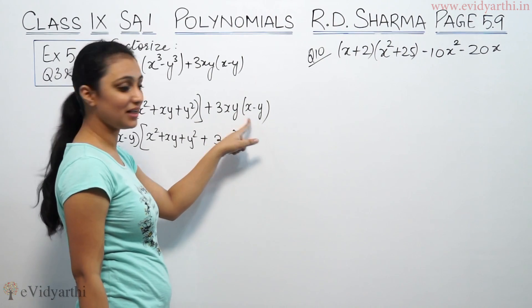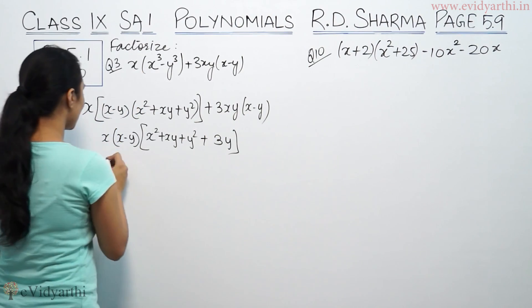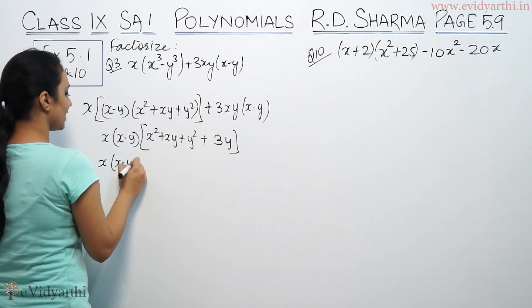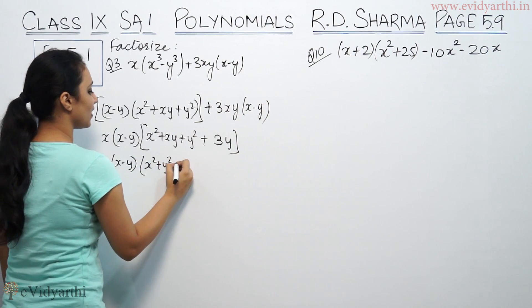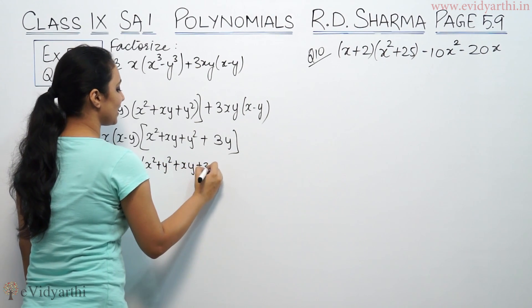Because these terms have cancelled, we're left with 3xy. So we have x(x - y)(x² + y² + xy + 3xy). So this is the answer.